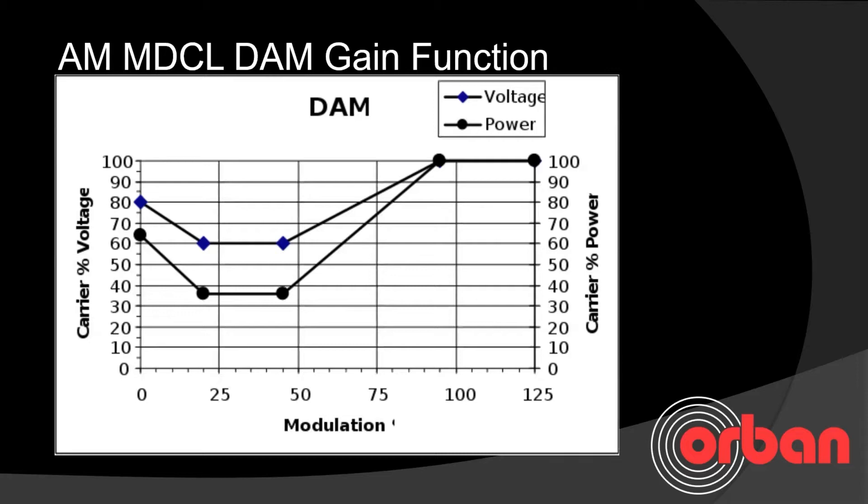Here's a gain function chart borrowed from the folks at Nautel. It shows that as the percentage of modulation changes, the amount of power output of the transmitter is affected — and again, with very high modulation densities that we're seeing today, you don't really save a whole lot of energy.